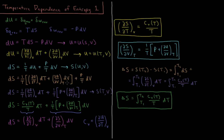We now have an extra volume term but still just one temperature term. Factoring, we get dS equals (1/T)(∂u/∂T) dT plus (1/T) times the quantity pressure plus (∂u/∂V) at constant temperature, times dV. Here we see S expressed as a function of temperature and volume, which is what we need to find the temperature dependence of entropy and begin finding the absolute value of entropy from a macroscopic perspective.